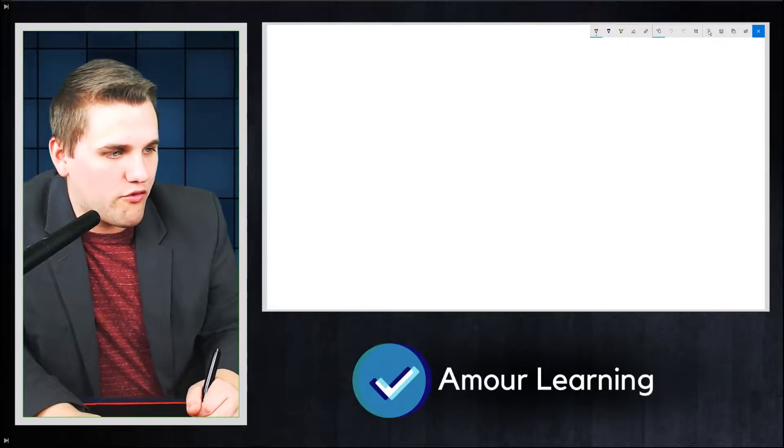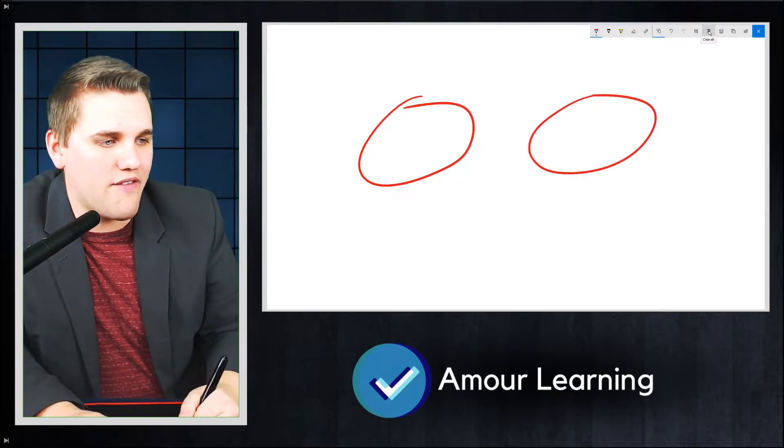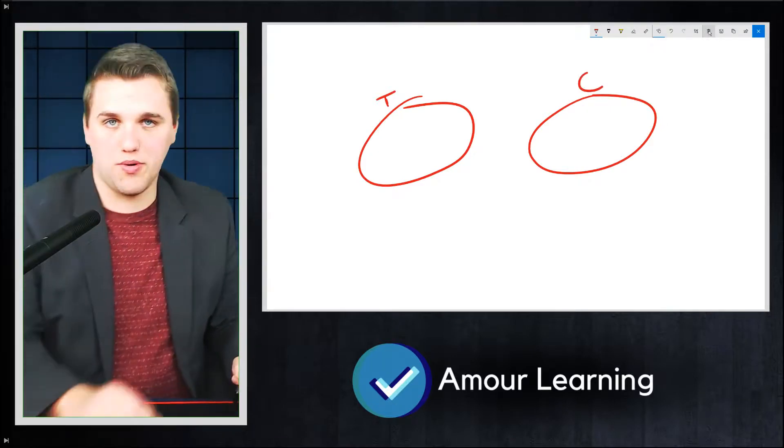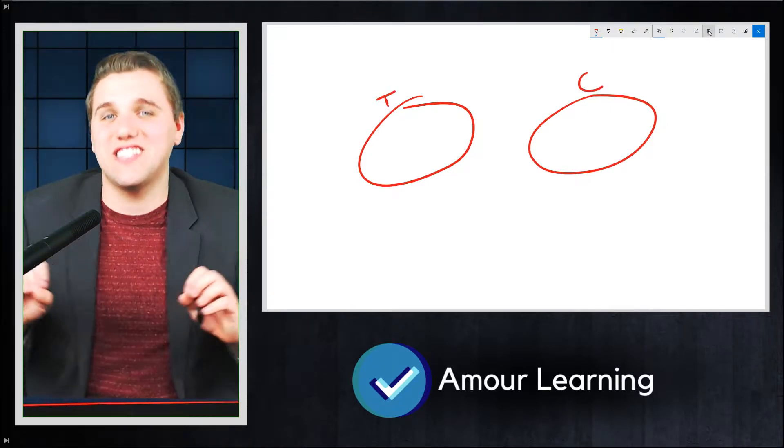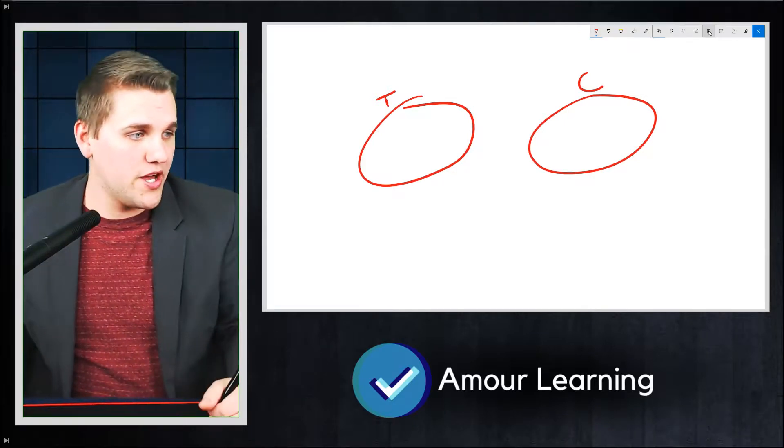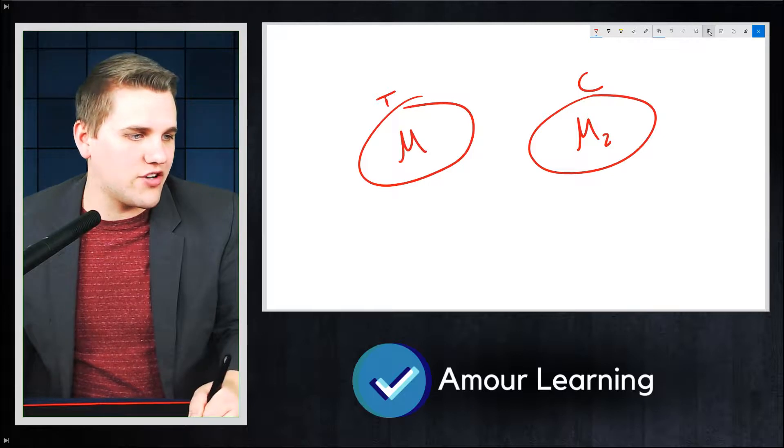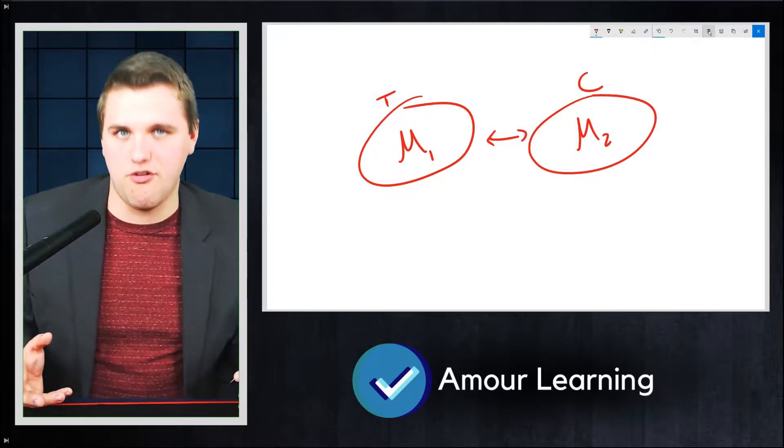And this is very useful for when you have experiments where you have a treatment group and you have a control group. And you want to know, are the results of these two groups statistically significant to each other? So you have, let's say, an average here and you have an average here. And you want to know, are these two averages different from each other?